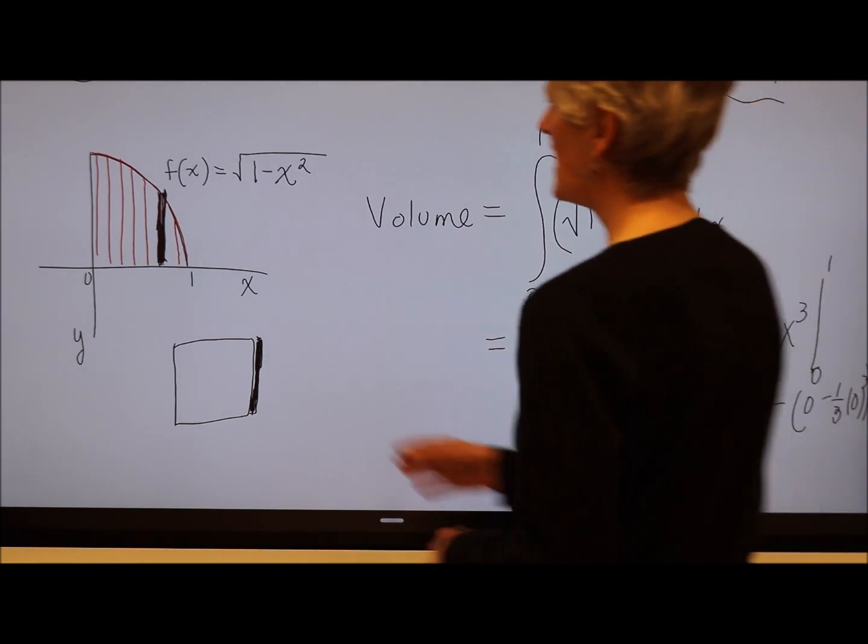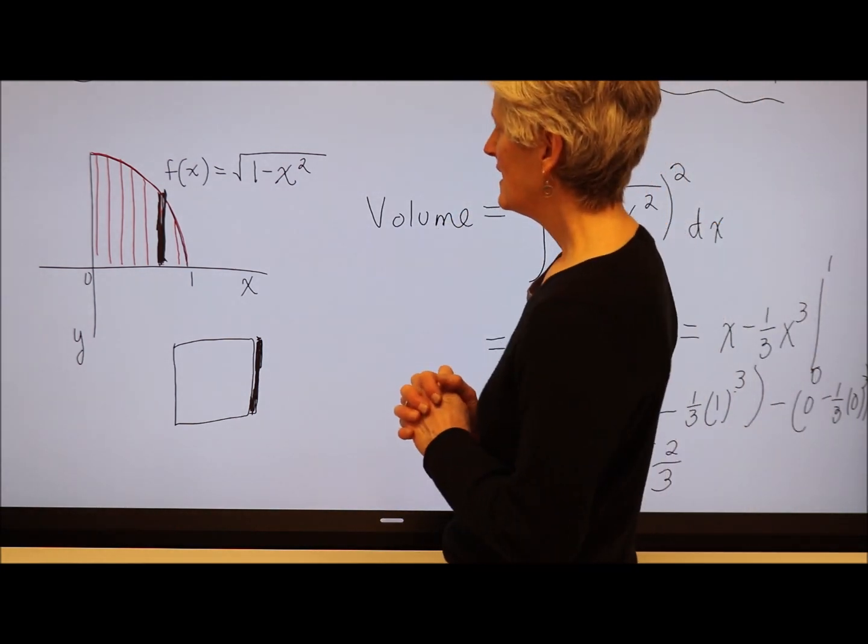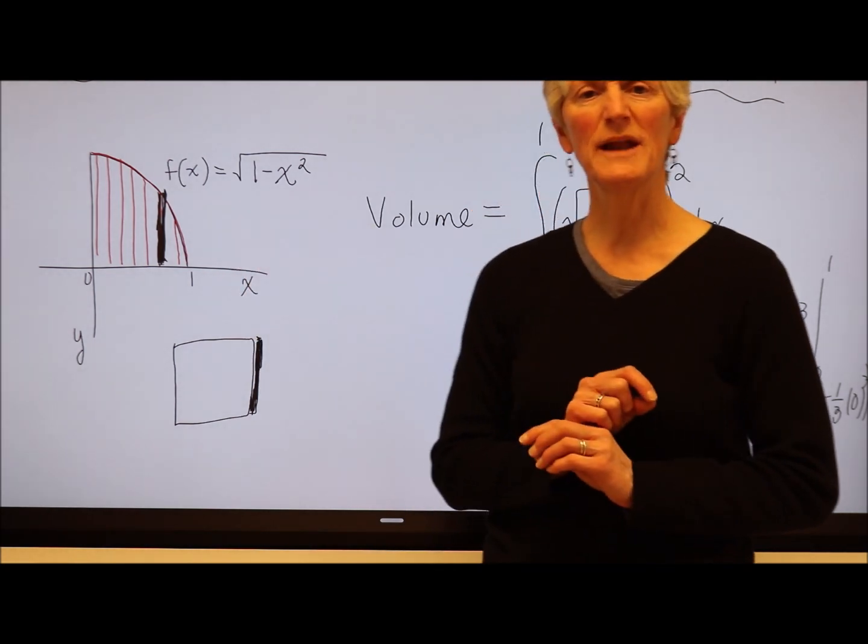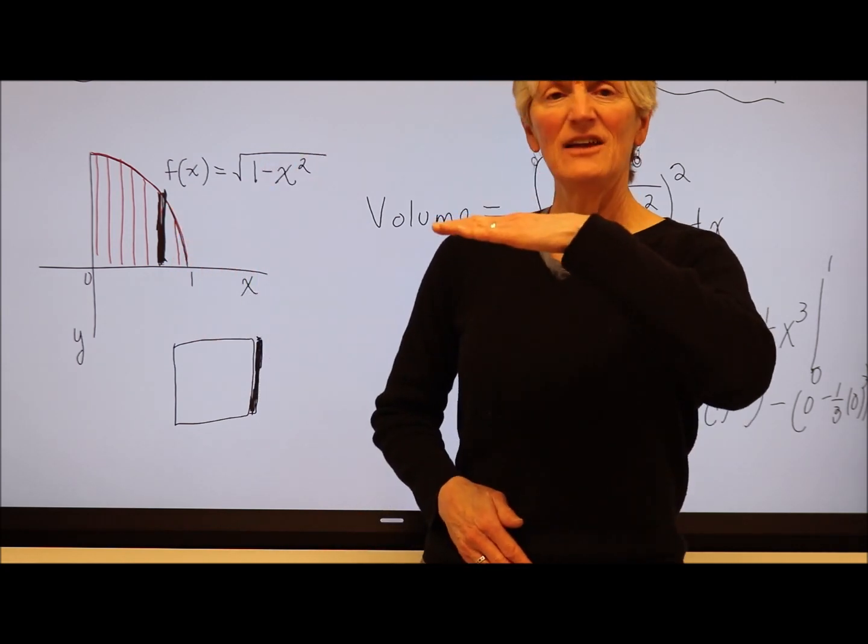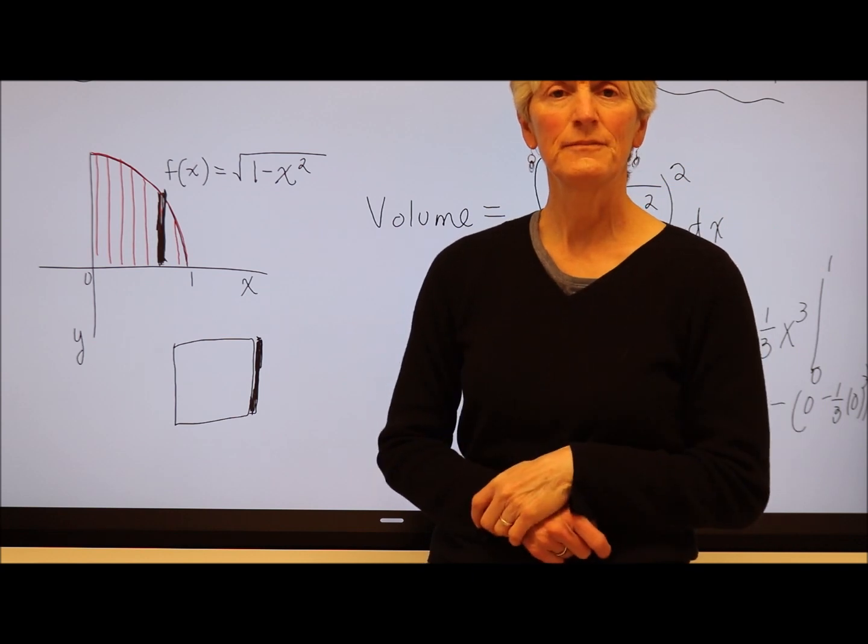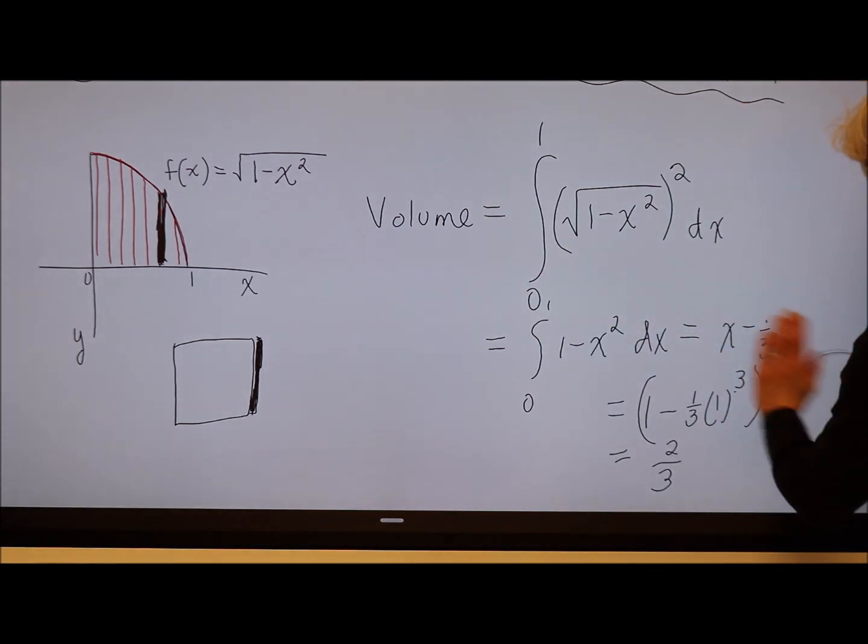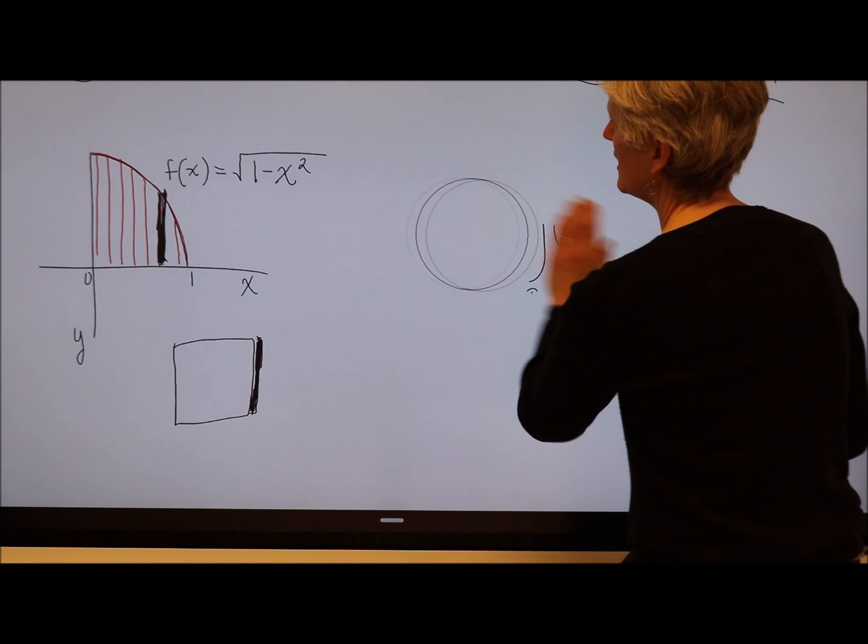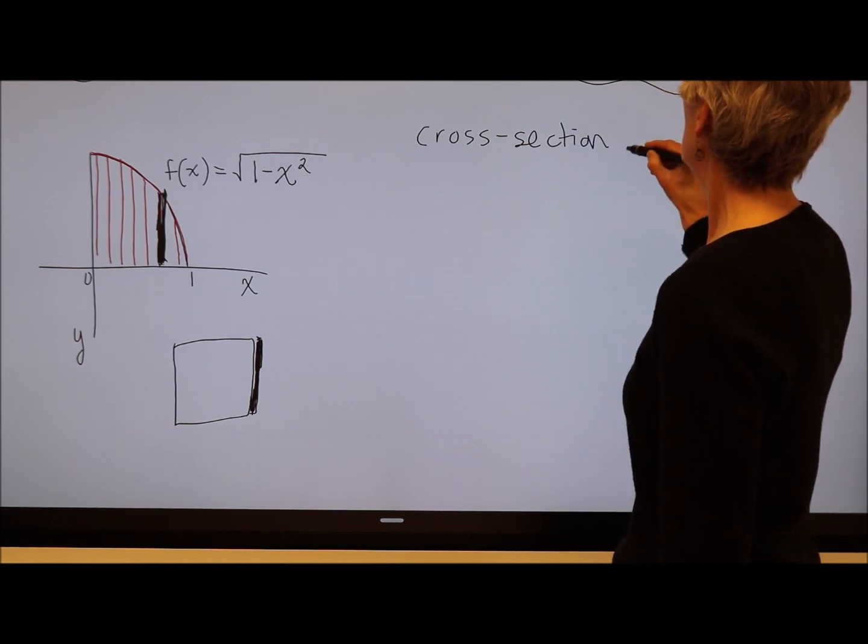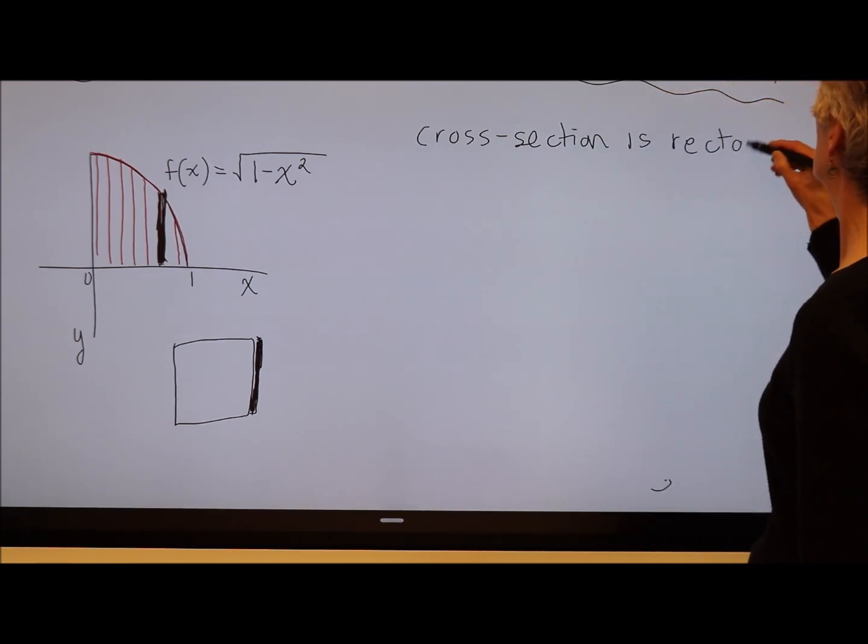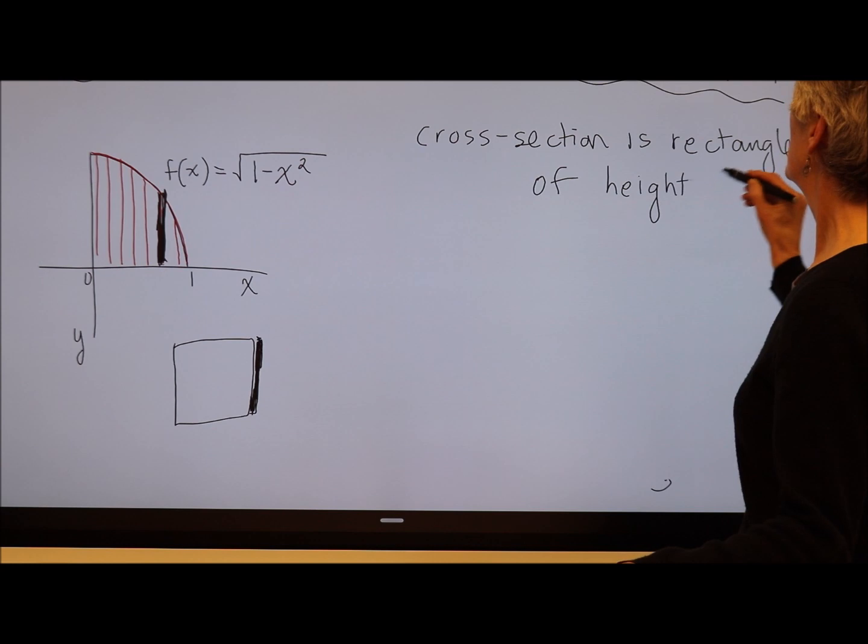Now, what if instead of each slice being a square, what if instead I said I wasn't building squares, but I was building a loaf of bread where the height was always constant? So let's say that my cross section, instead of it being a cross section of a square, which is what we did here, let's say it's the same scenario, but now my cross section is a rectangle of height 4 units.